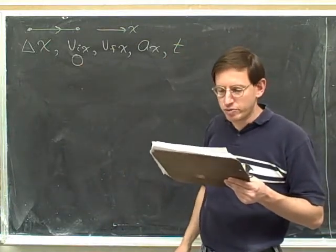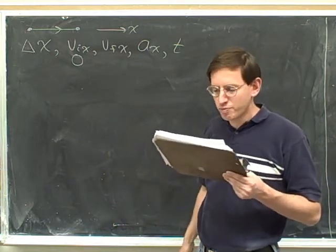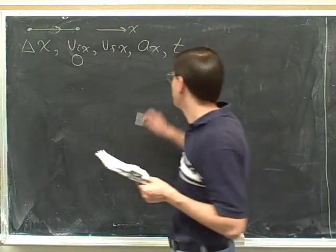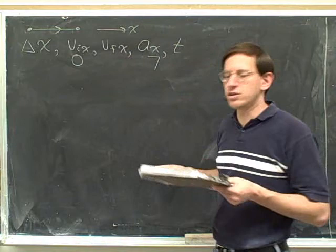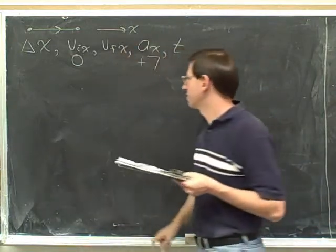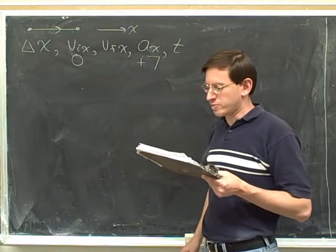An object moves with constant acceleration. That's how we know that we can use this general kinematics approach. Positive seven meters per second squared. In these videos, we're not going to write down the units, but we're always going to write down the sign on the acceleration. Positive seven.